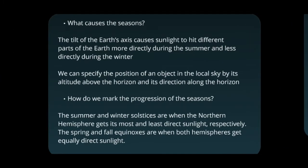The seasons are caused by the tilt of the Earth's axis. The sun hits more directly on the northern hemisphere during the summer solstice, and more directly on the southern hemisphere during the winter solstice.